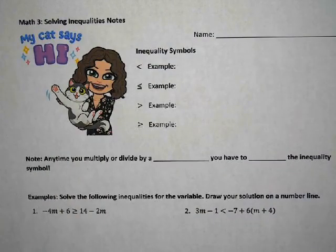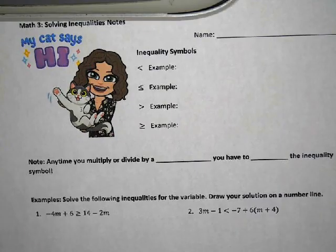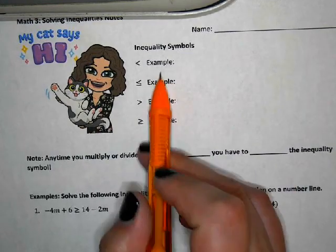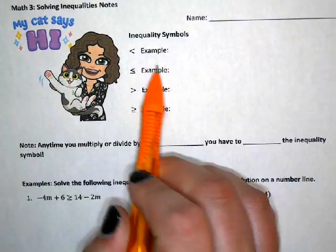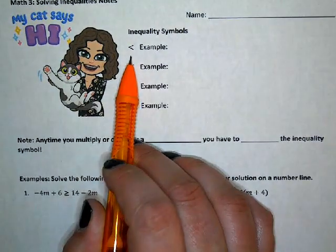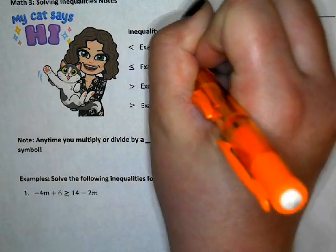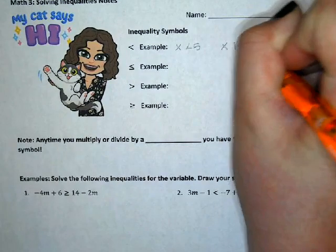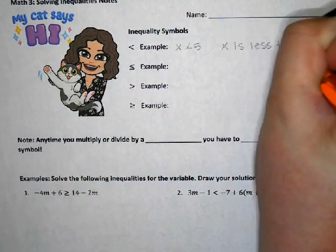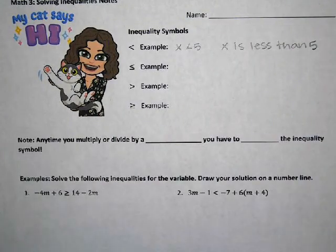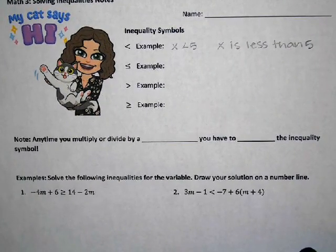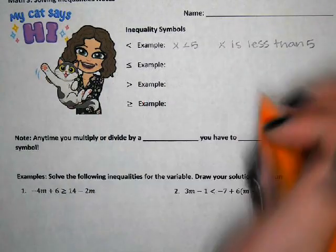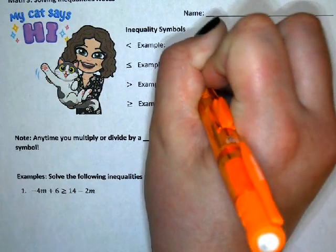First we're going to write down different inequalities just to make sure we remember what inequalities are. So this first one is a less than symbol — like if we have x is less than five. If it has a line underneath, it is less than or equal to.